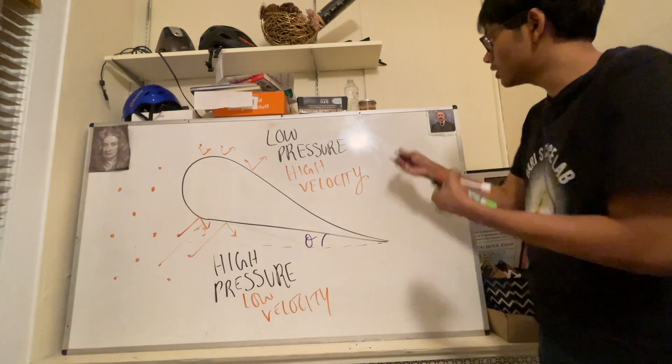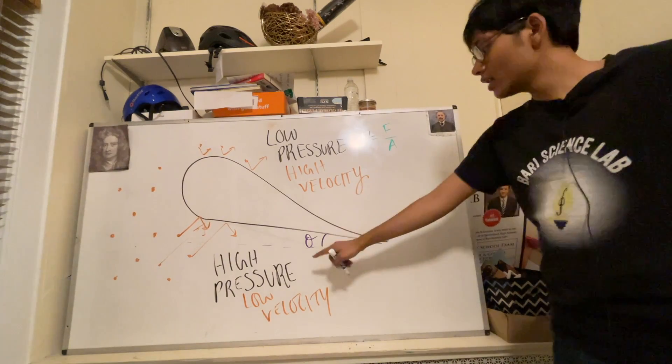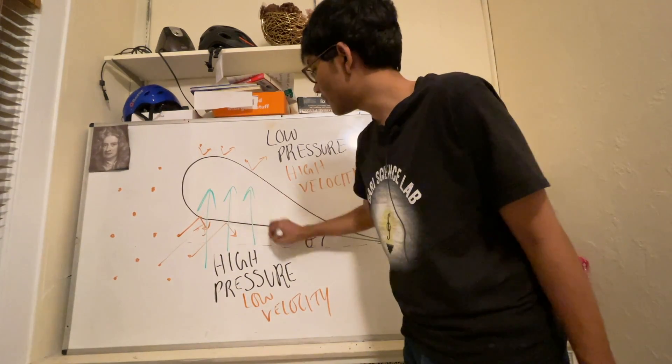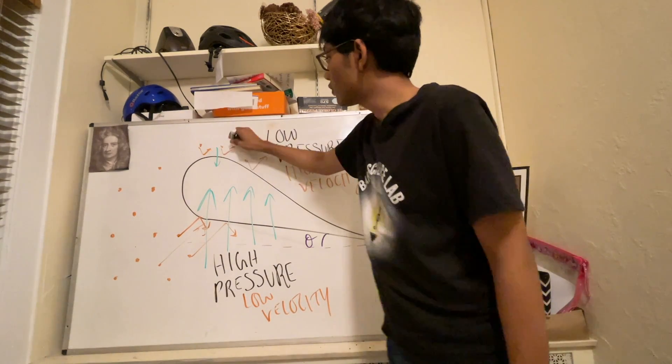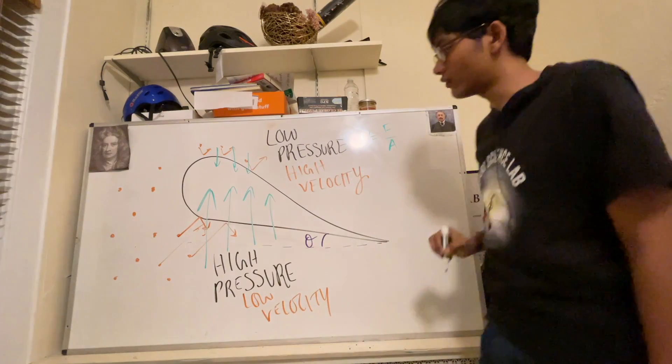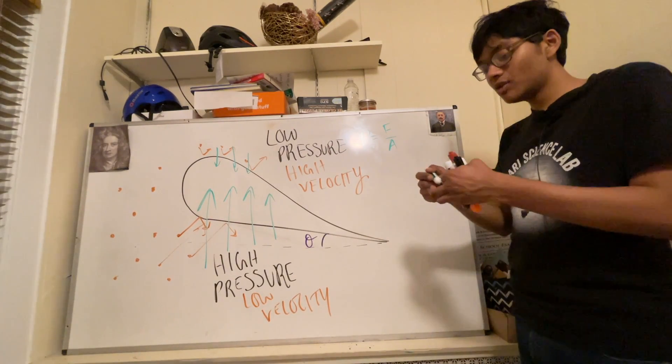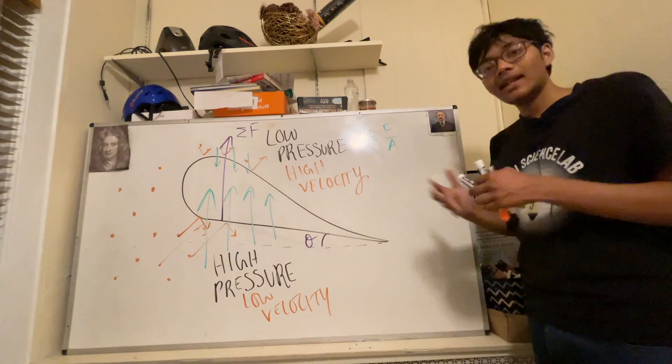So remember, pressure is given as force per unit area. So a higher pressure means a greater force from the bottom of the airfoil. On the other hand, a low pressure from the top means a smaller force from the top of the airfoil. And so the higher force from the bottom counteracts the smaller force on the top, and so you have a net force that generates lift for the airplane.